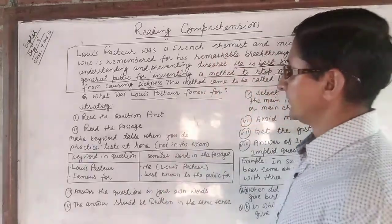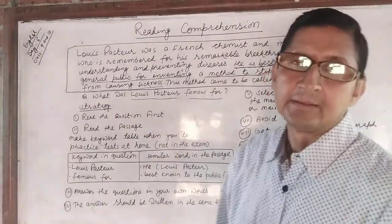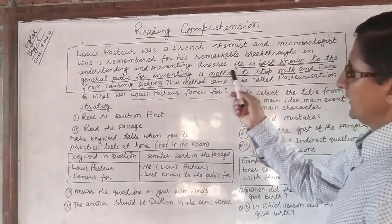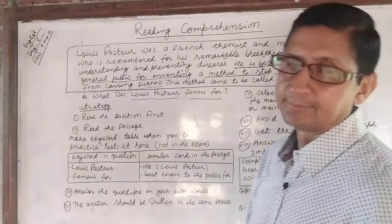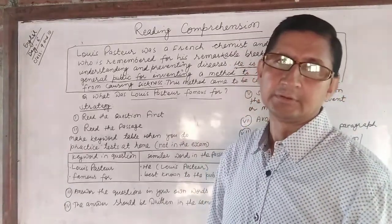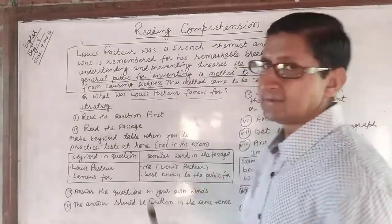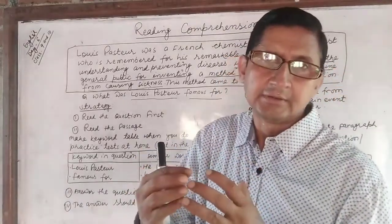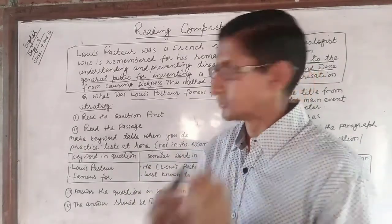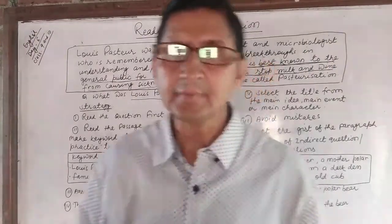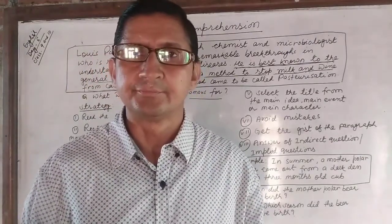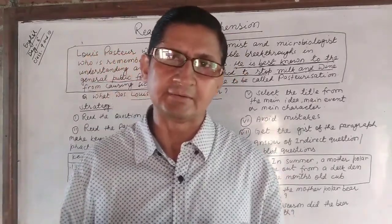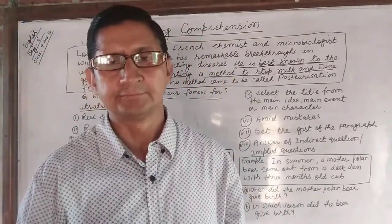For example, the question 'What was Louis Pasteur famous for?' is in past tense, so you have to write the answer in past tense. However, the sentence in the passage where the answer appears is written in present passive form. If you copy the same sentence from the passage, your tense will not match and the answer will be incorrect. So always write the answer in the same tense as the question.